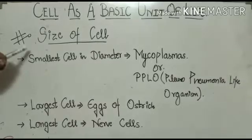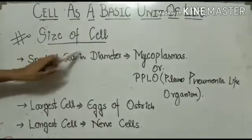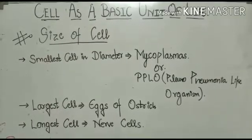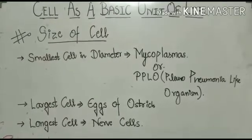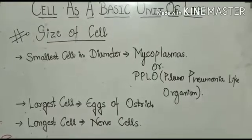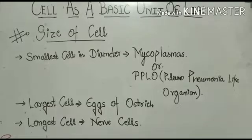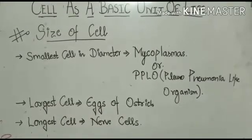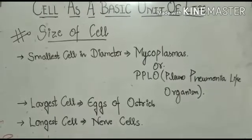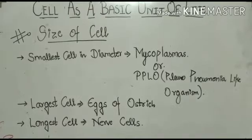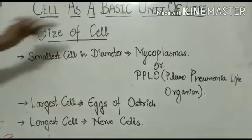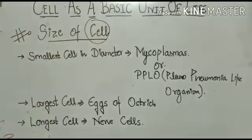Now we discuss about the size of cell. Size of a cell is greatly variable. Some of these cells can be seen with the help of an unaided eye, but most of these cells are too small to be seen with the naked eye.